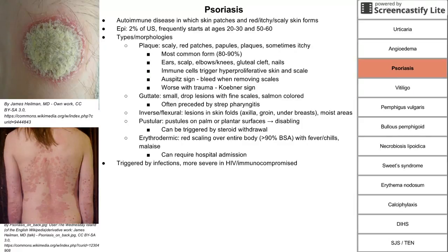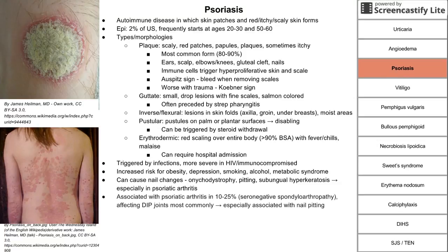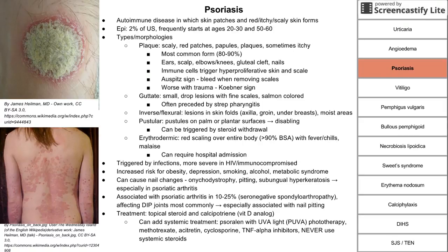Psoriasis can be triggered by infections and is more severe in HIV or other immunocompromised people. There is increased risk with obesity, depression, smoking, alcohol, and metabolic syndrome. Psoriasis can cause nail changes: onychodystrophy, pitting, and subungual hyperkeratosis — especially in patients with psoriatic arthritis, which is a seronegative spondyloarthropathy occurring in 15–25% of psoriasis patients mainly affecting the DIP joints. Treatment includes topical steroids and the vitamin D analog calcipotriene. Severe cases may need systemic treatments: PUVA phototherapy, methotrexate, cyclosporine, or other systemic drugs.